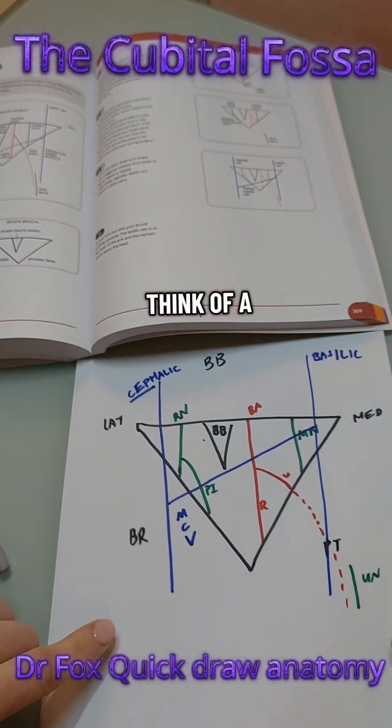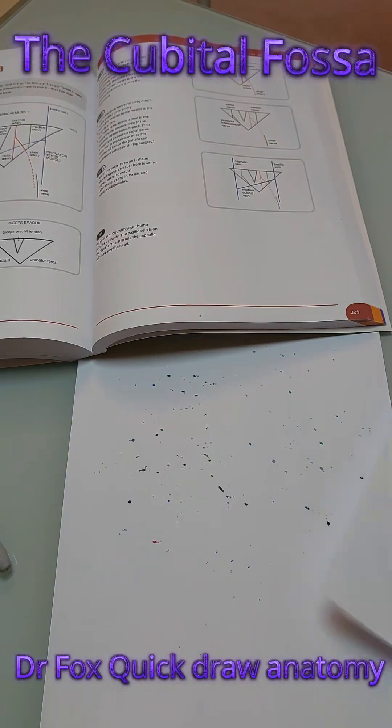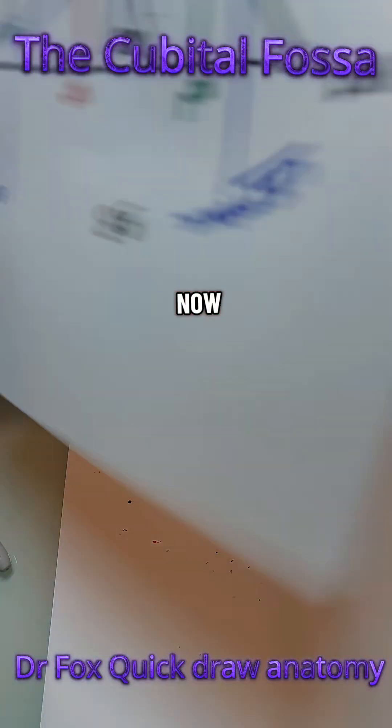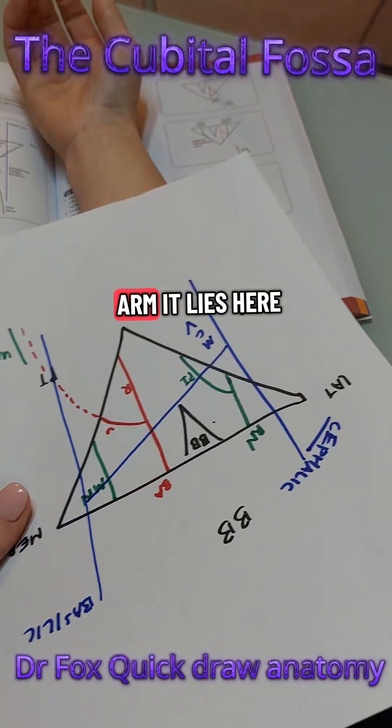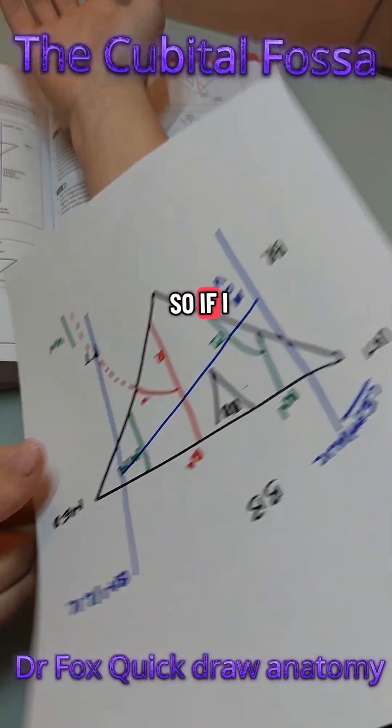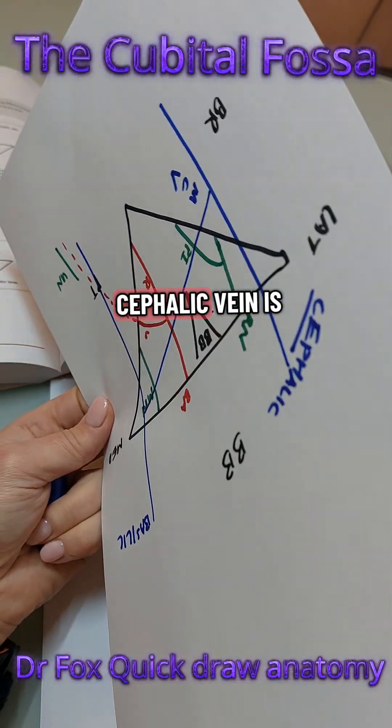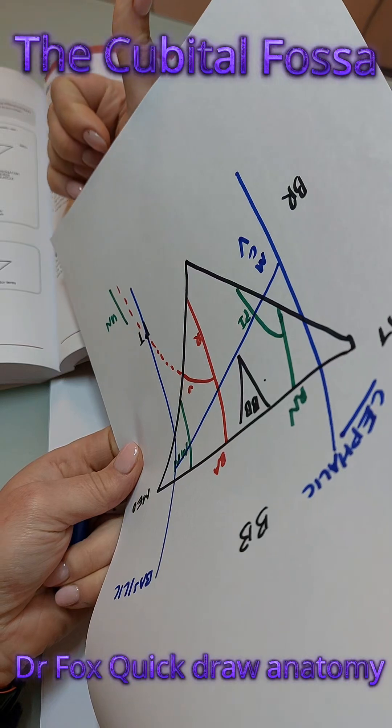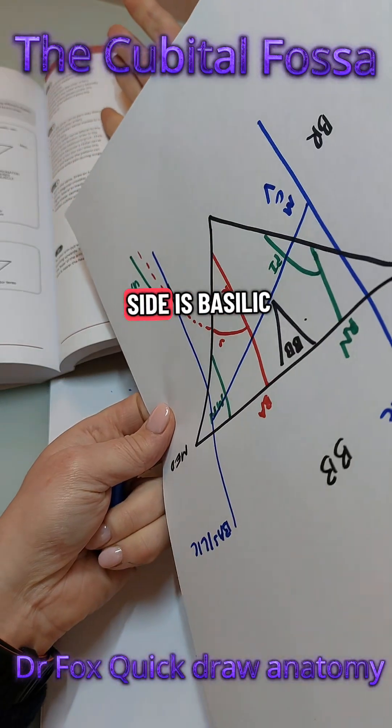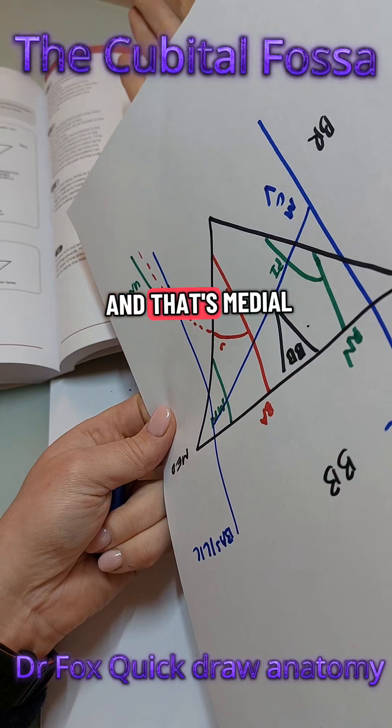So when I think of a cubital fossa I'll show you now. This is my arm, it lies here. So if I hold my arm up to the sky the top side the cephalic vein is near the head and the bottom side is basilic and that's medial.